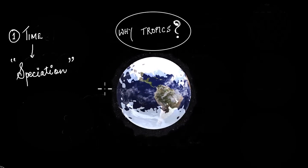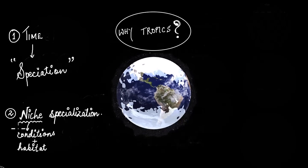Now moving ahead to the next hypothesis, which is my personal favorite one, is niche specialization. Now niche has a number of definitions, but in simple words, it simply means the conditions and habitat that is required for an organism to survive. Now how is this niche specialization helping in having more diversity in the tropics?